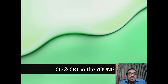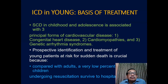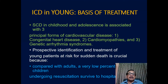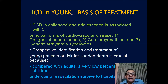When you look at ICD and CRT in the young, sudden cardiac death in childhood and adolescence is associated with three primary forms of cardiovascular disease: one, congenital heart disease; two, cardiomyopathies; and three, genetic arrhythmia syndromes. Prospective identification and treatment of these young patients at risk for sudden cardiac arrest is crucial because, compared with adults, only a very low percentage of children who undergo resuscitation actually survive to hospital discharge.